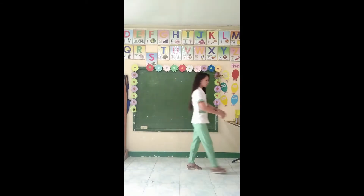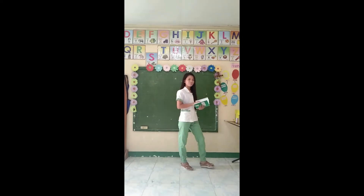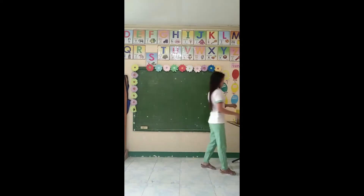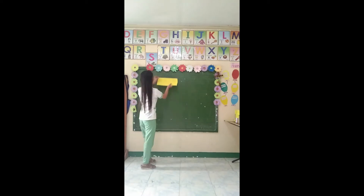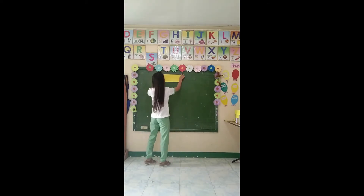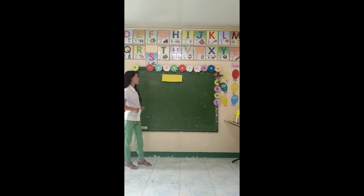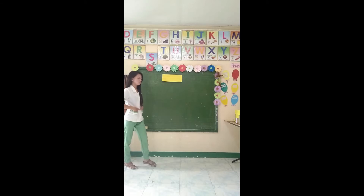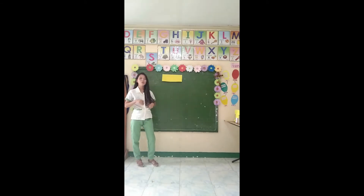So, class, who is absent for today? Okay, none. Perfect. So, our lesson for today is all about reading and writing numbers up to 100,000 in words and symbols. I will group you into five groups. Each group will answer the following questions. Is that clear?